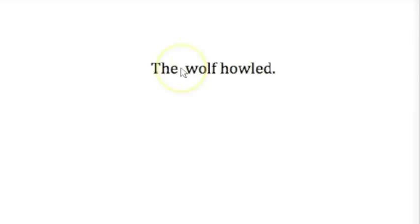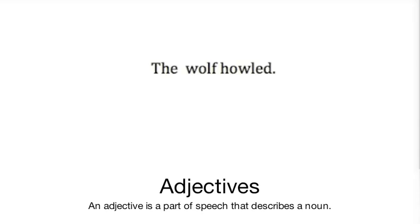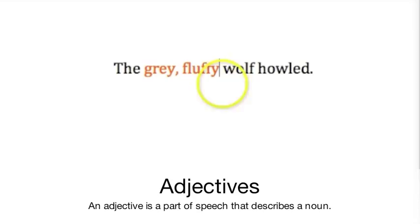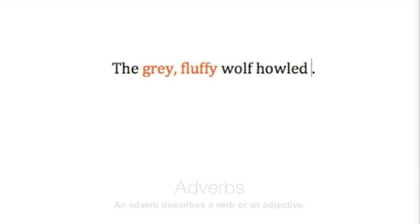Let's start with a simple sentence such as 'the wolf howled.' How about adding some adjectives to wolf, like grey and fluffy? An adjective describes a noun. Now the sentence is 'the grey, fluffy wolf howled.'